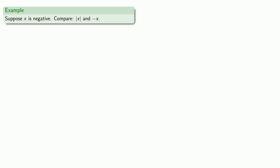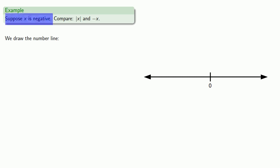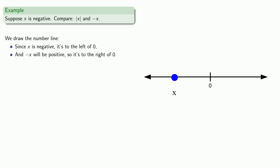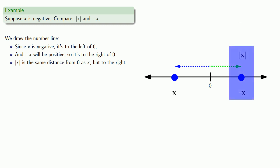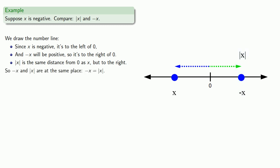Suppose x is negative. Let's compare the absolute value of x and negative x. We'll do this the easy way — draw the number line. Since x is negative, we know it's to the left of 0. Negative x will be positive, so it's going to be to the right of 0. Since the only thing that's changed is the sign, negative x must be the same distance from 0 as x. The absolute value of x is also the same distance from 0 as x, but always to the right. So negative x and the absolute value of x are at the same place, and they must be equal.